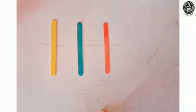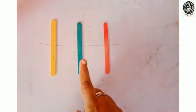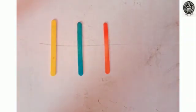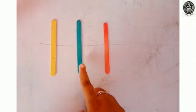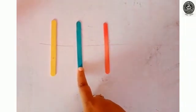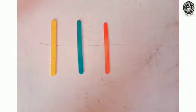And which is the middle color stick? Think, think. Yes, you got it. Very good. The blue color stick is the middle color stick. Children, I think now you all have understood the concept of middle number.